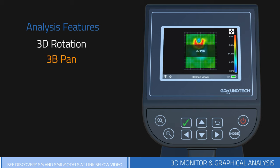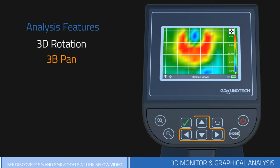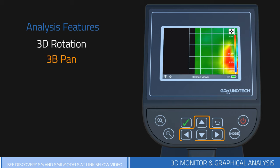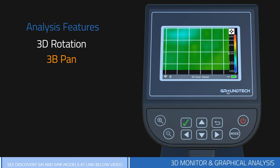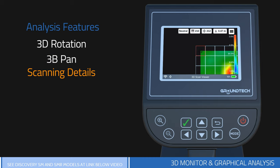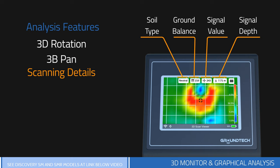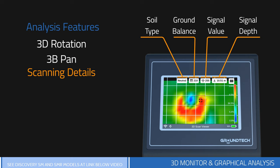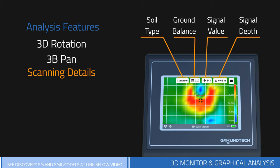The second feature is 3D pan. You can examine your graph and the colors closely by zooming in. You can move the graph left and right, up and down, with the direction buttons and go through the graph. The third feature is scanning details, where you can see numerical values of your data and get information about depth by choosing the type of soil. You can go around the graph with direction buttons and examine the point details.